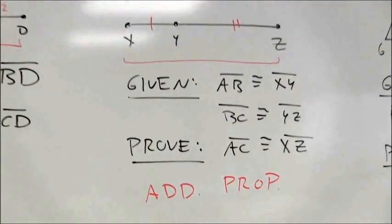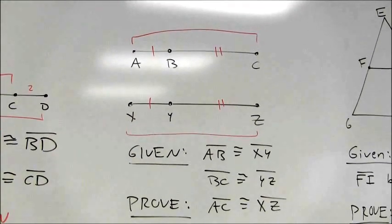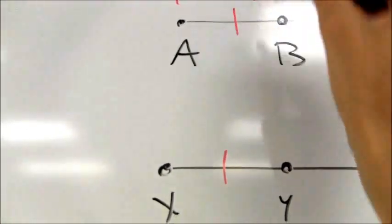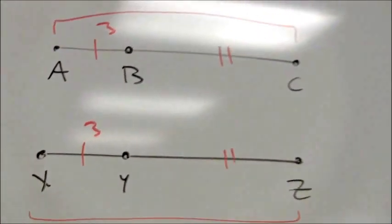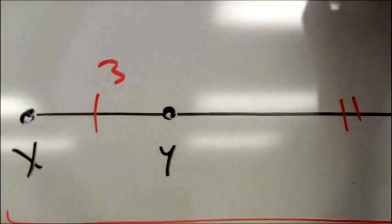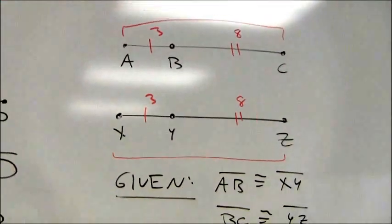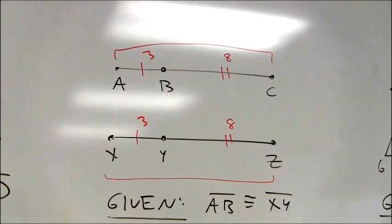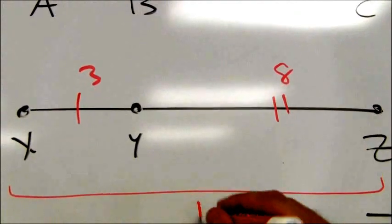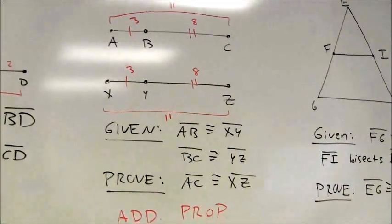If you needed to see this using numbers, I could make up values for the original givens. If AB and XY were both 3, and BC and YZ were say 8, then when I have those two equal segments of 3 and I add on two equal segments of 8, I get two equal segments of 11. And you can see that you're actually using addition to do that.